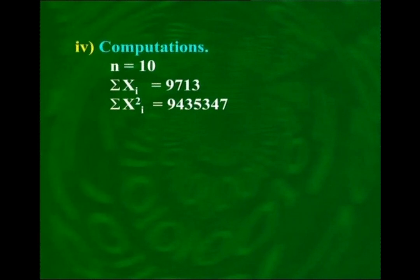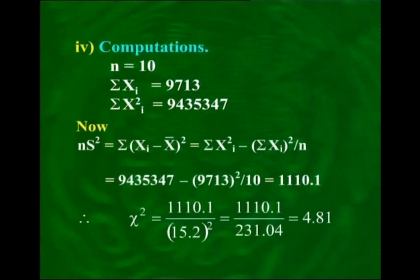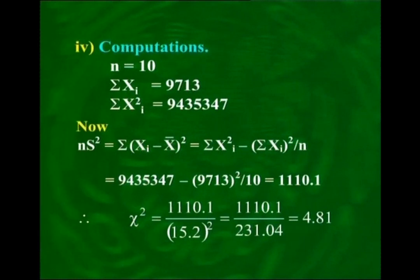The next step is the calculation. The sample size is 10, Σx equals 9713, and Σx² equals 9,435,347. Now, n·s² equals Σx² minus (Σx)²/n according to the shortcut formula, and substituting the values, n·s² comes out to be 1110.1. Hence, the test statistic chi-square equals n·s²/σ₀² equals 4.81.